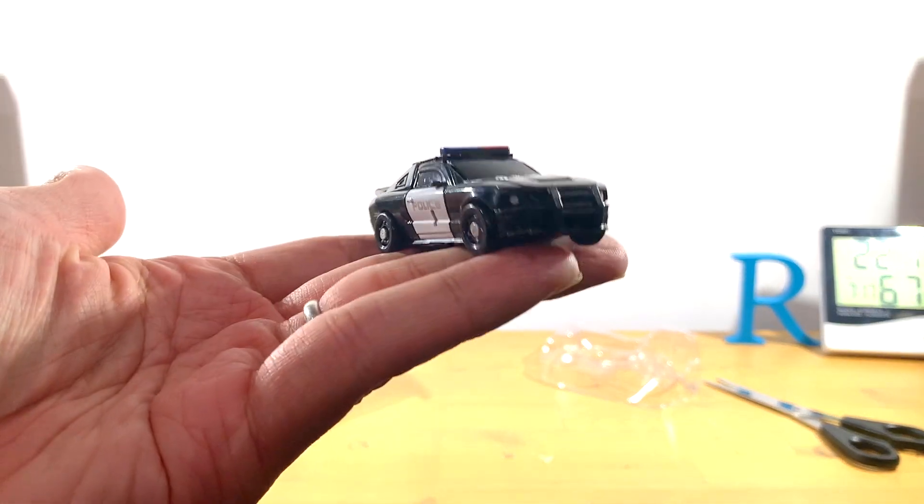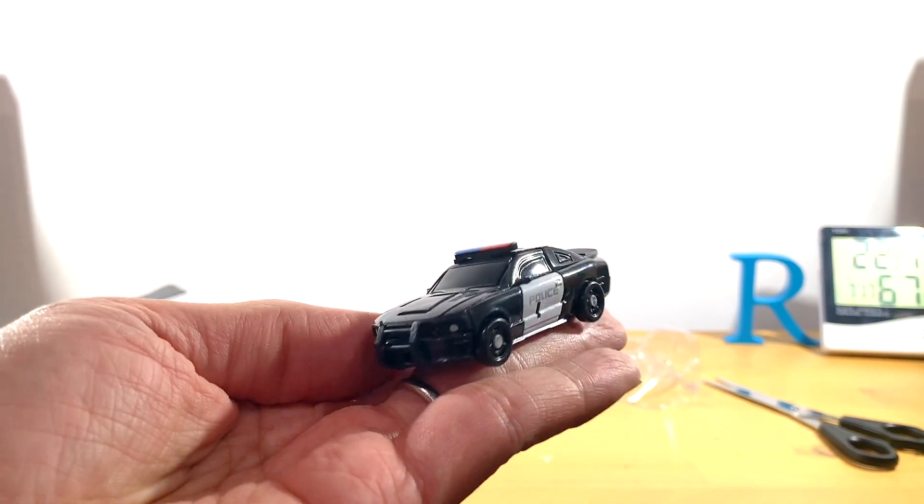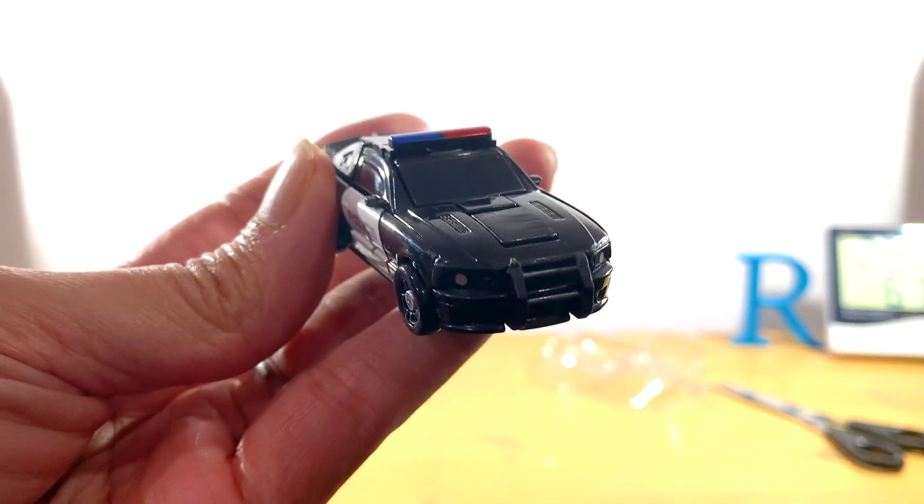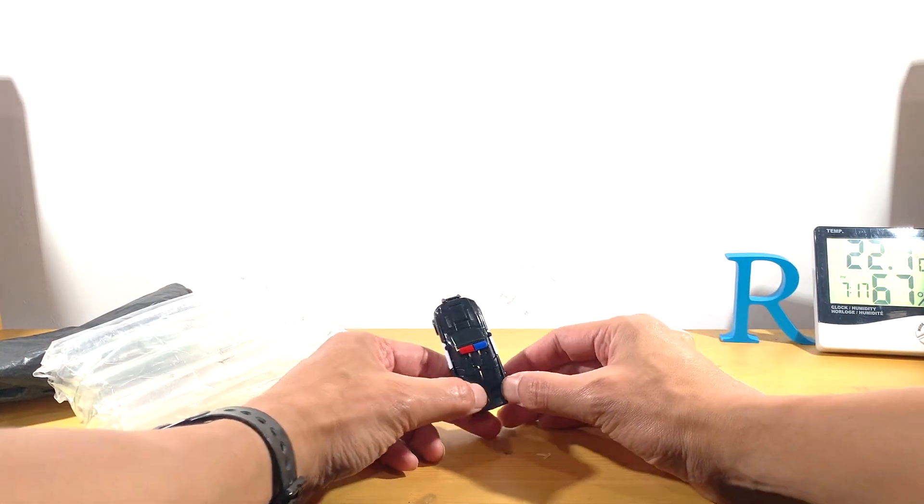Pretty nice, looks very much like the Ford Mustang police car that Barricade is. Then to transform him back into robot mode...